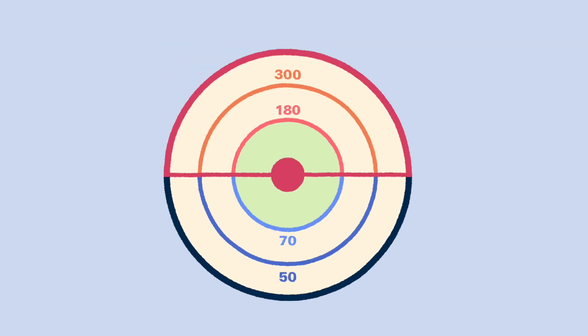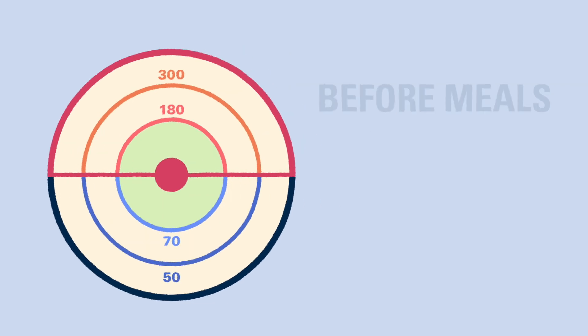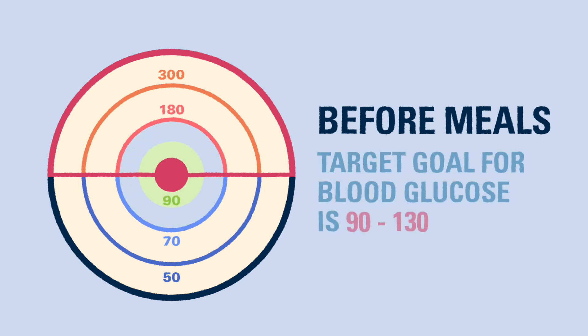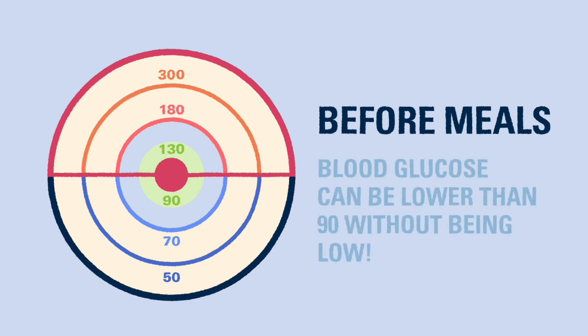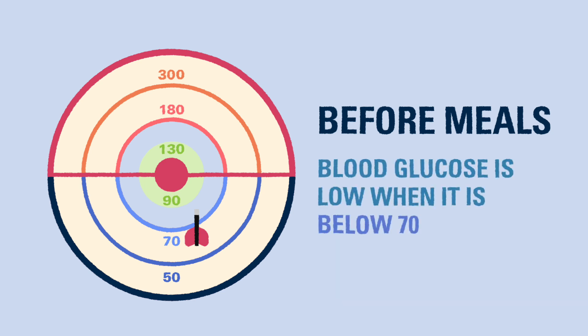The target blood glucose range changes a bit throughout the day to guarantee safety and ensure healthy outcomes. For example, before meals, a child's blood glucose should ideally be somewhere between 90 to 130. It is possible for the blood glucose to be below the target range and not have a low blood glucose. Remember, a low blood glucose is any result less than 70.